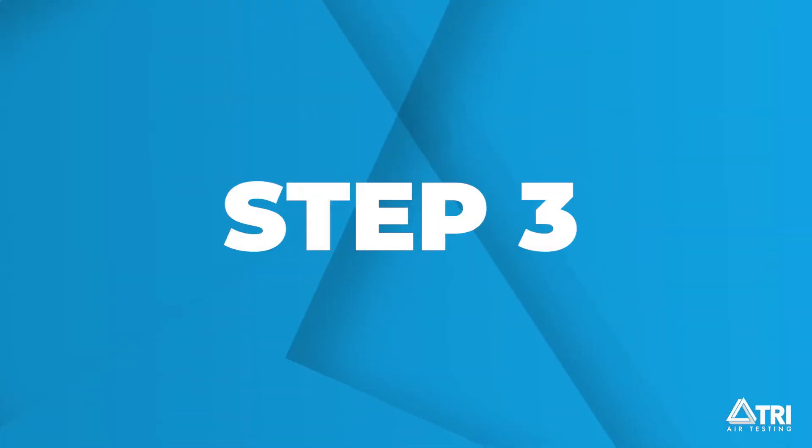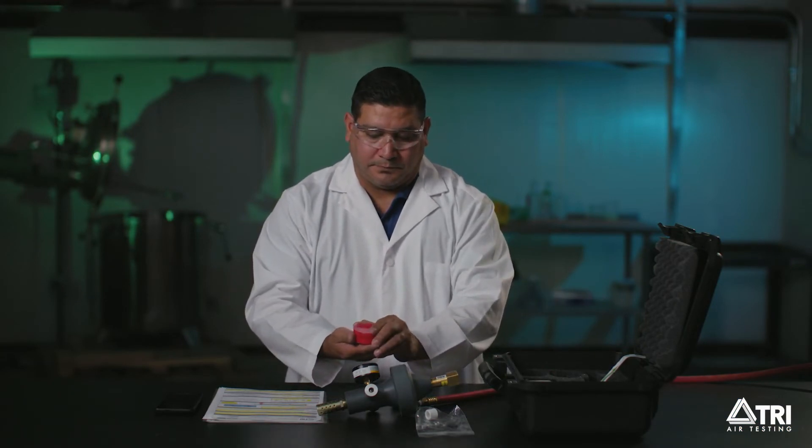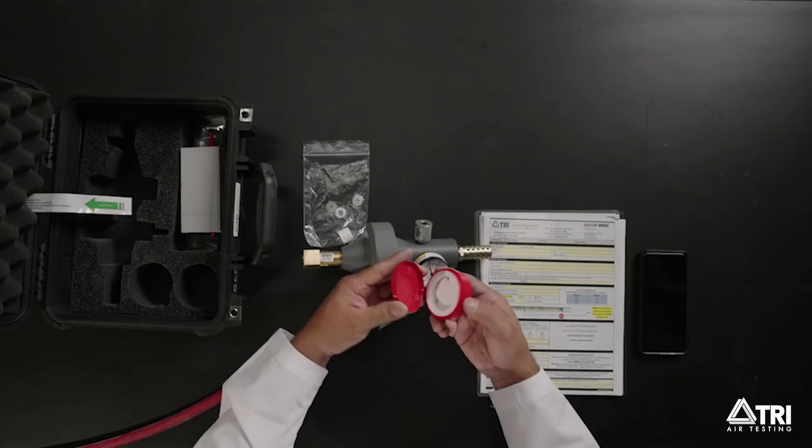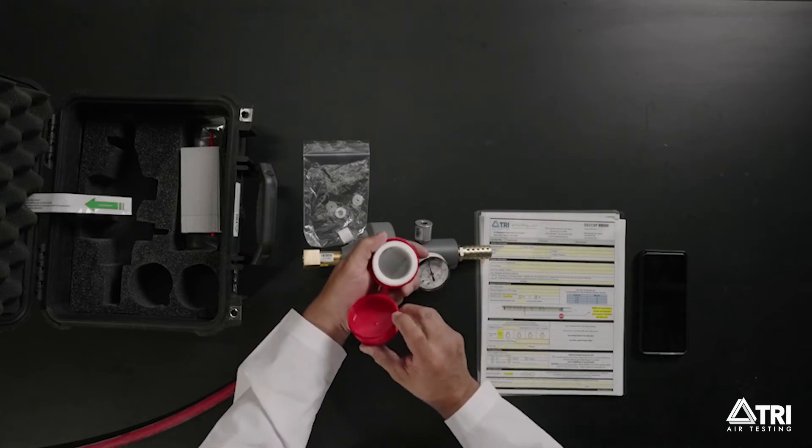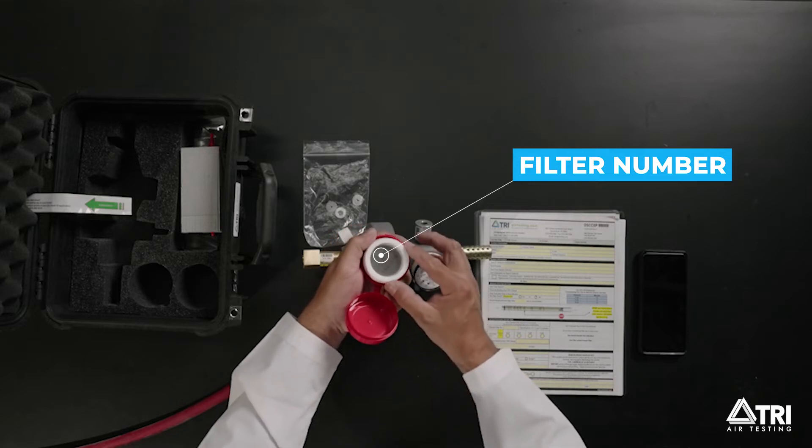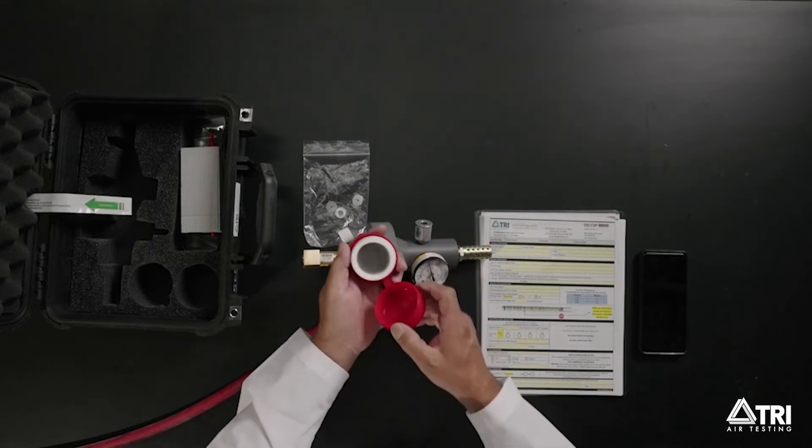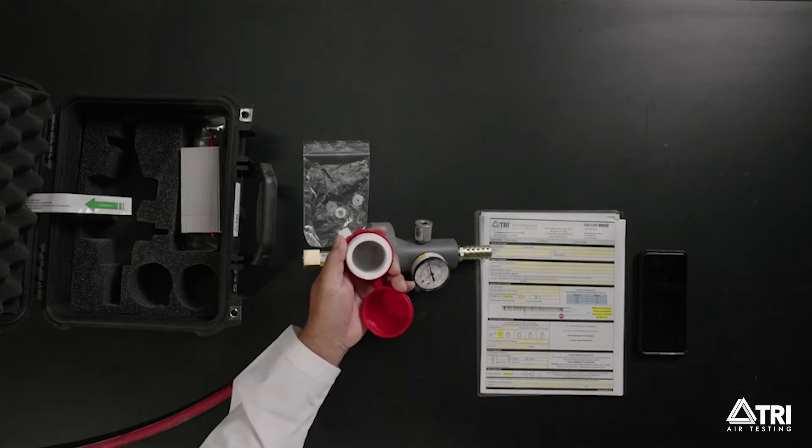Step 3. Record the filter number. To find that number, remove a filter assembly from the filter case and carefully locate the number on the screen. The number is found on the side of the filter assembly opposite of the white filter pad as shown here. Record this information on the data sheet under oil mist particulate sample data.